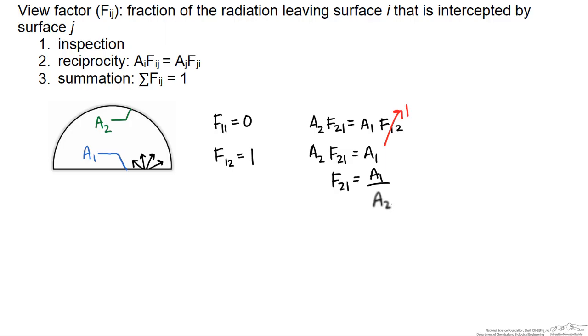Remembering this is a duct or a tube, the length of the tube we'll call L. The area of the floor, area one, is going to equal two times the radius of the hemisphere times the length of the tube. A two is going to equal half the area of a circular tube, which is one half times pi DL, or just pi RL.